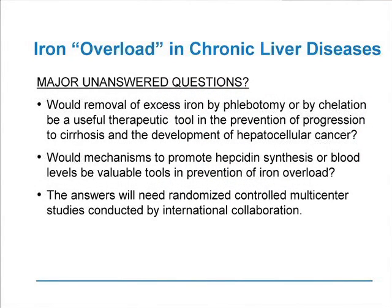The major unanswered questions in chronic liver disease — not that of homozygous haemochromatosis — are: would removal of excessive iron by phlebotomy or by chelation therapy be a useful therapeutic tool for the prevention of progression to fibrosis, cirrhosis, and ultimately liver cancer, which is exclusively seen in individuals with fully developed cirrhosis? And would mechanisms to promote hepcidin synthesis or increase blood levels of hepcidin — the suppressor protein produced by the liver — be a valuable tool in the prevention of iron overload? The answers will only come from randomized controlled multicenter studies conducted on an international basis.